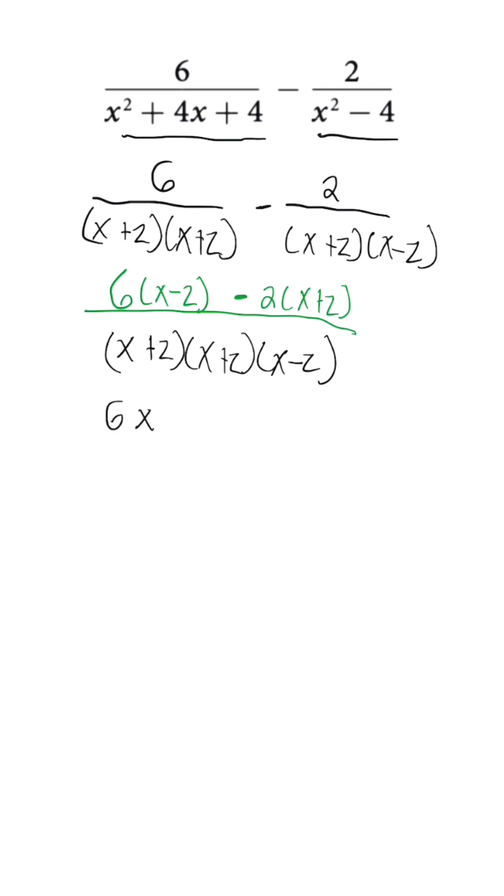we have 6x minus 12 minus 2x minus 4. And I'm going to simplify our denominator to x plus 2 squared times x minus 2.